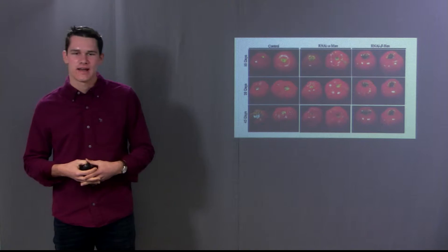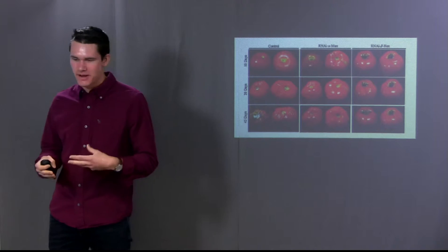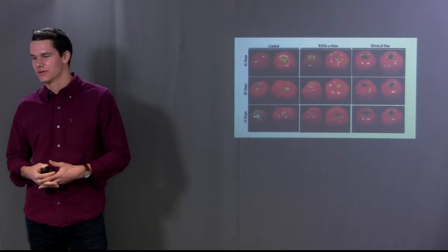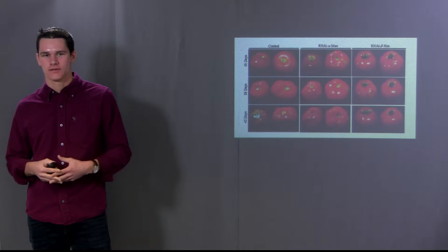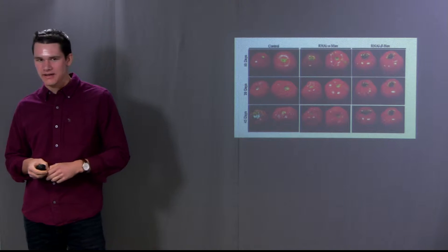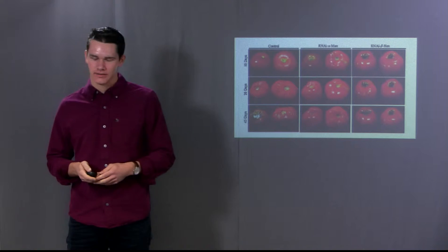And then in the 1990s, we have the Flavr Savr tomato, a tomato that can be picked close to peak ripeness and stay on the shelf for a longer period of time. But its flaws were that they had a low margin of profit. And with the paradigm shift in 1998, the tomato quickly left the shelves.